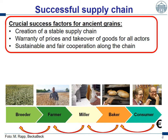And this is only possible when we get organized — so that the breeder, the farmer, the miller, and the baker each get the price they need. And when they produce the ancient grain, the next players in the supply chain take over the goods — the baker and finally the consumer. Therefore we need a sustainable and fair cooperation along the chain, because you never know the reaction of consumers, and thus we need those players to interact in a fair and long-term way.